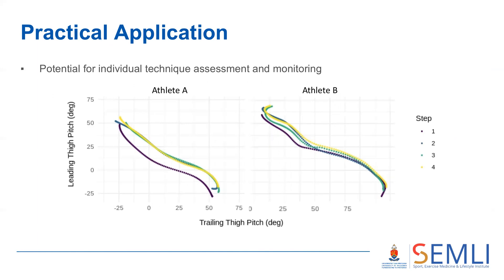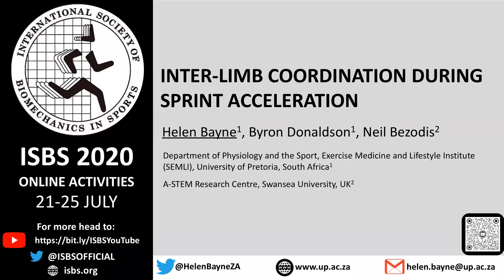For example, athlete A demonstrates a fairly linear pattern throughout, but there is a clear difference between step one and the rest of the steps. Athlete B, on the other hand, is very consistent across all steps but has a more pronounced decoupling in the mid portion and at both endpoints. This type of analysis will support an individualized intervention approach. If you have any questions or would like to discuss this research and its application, please feel free to get in touch.